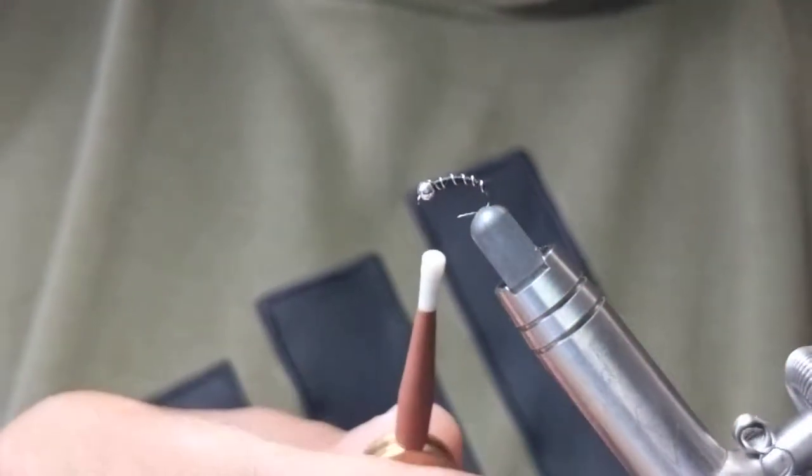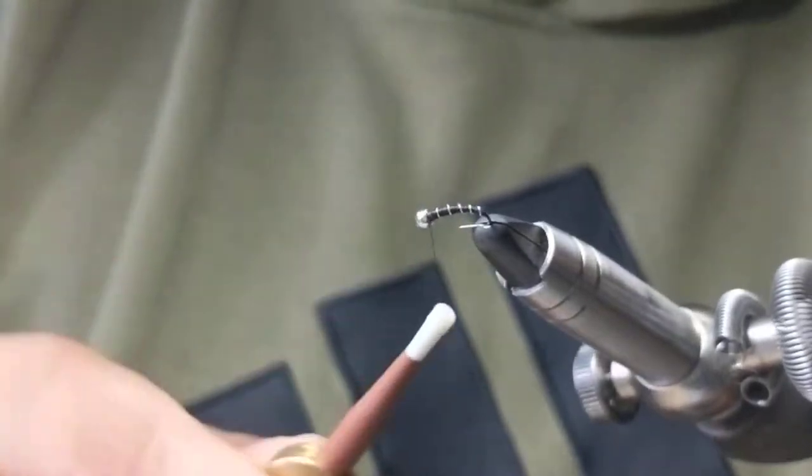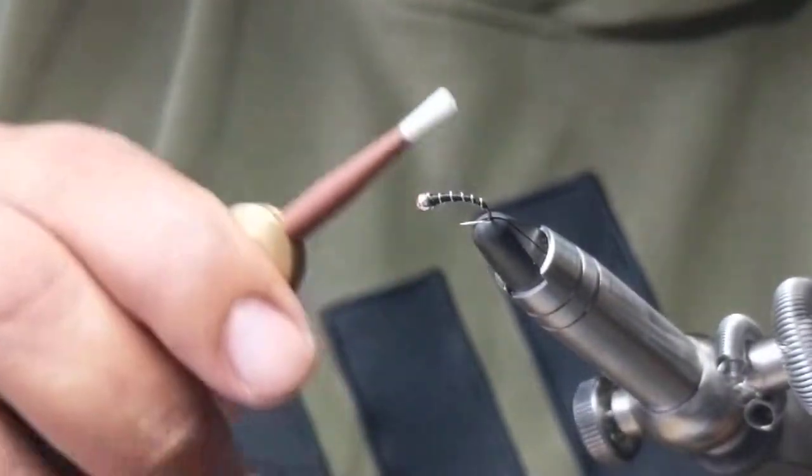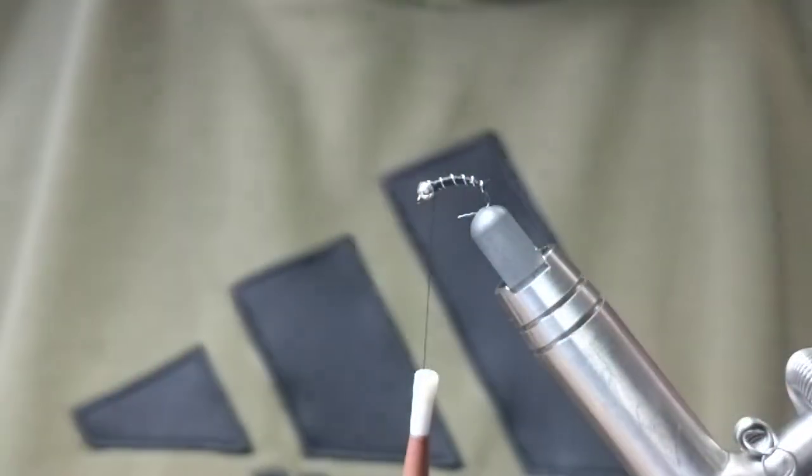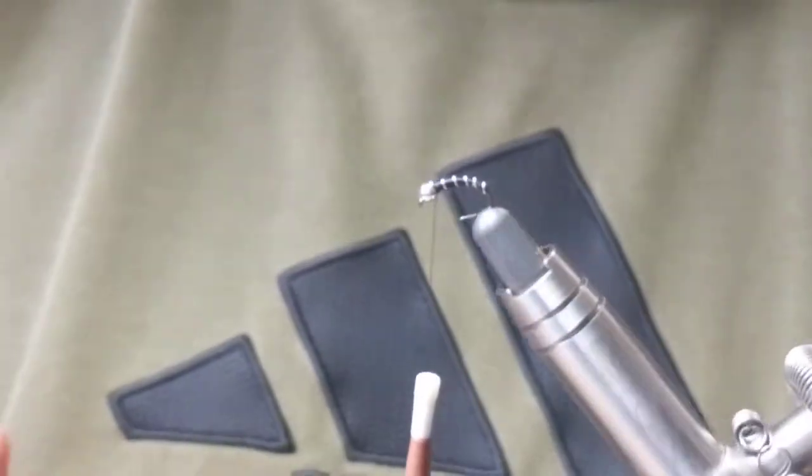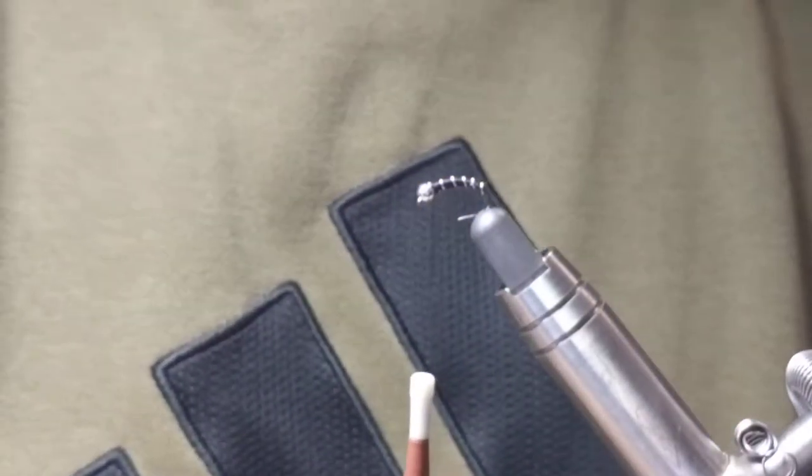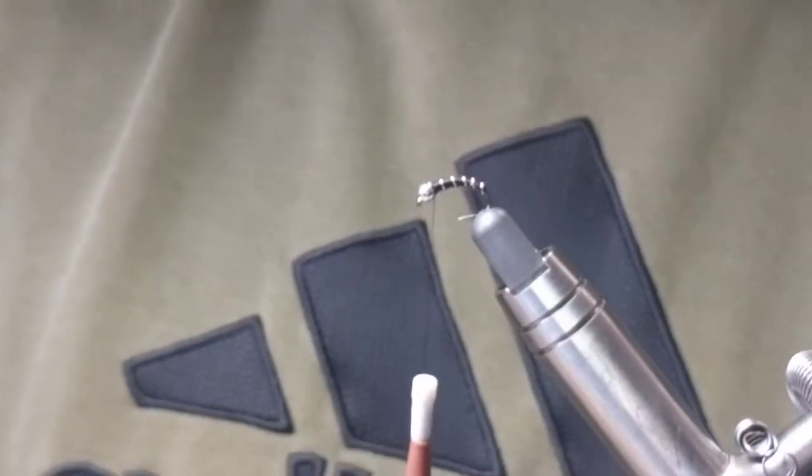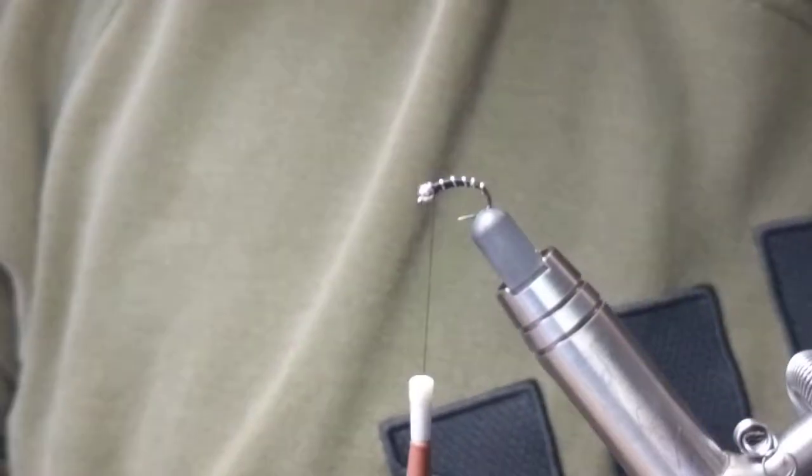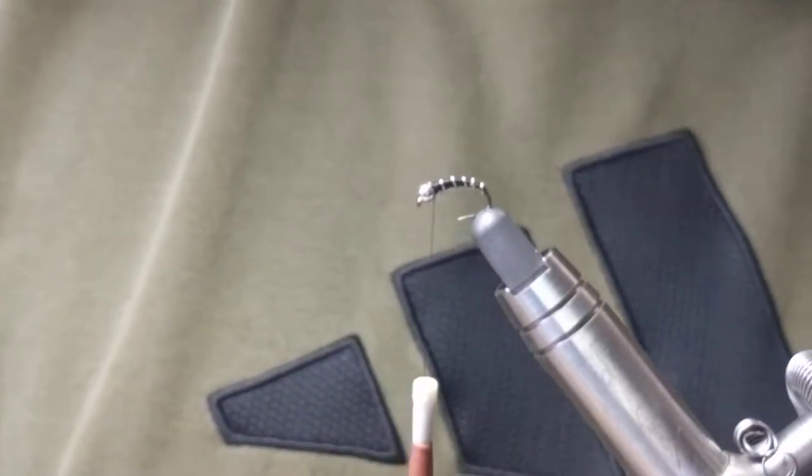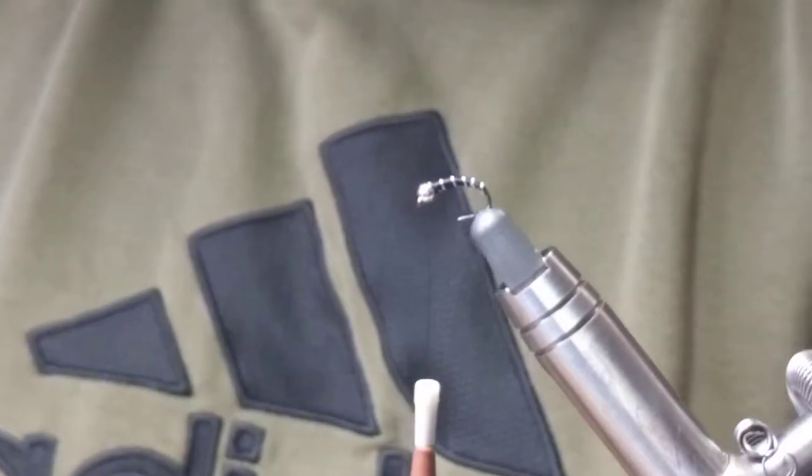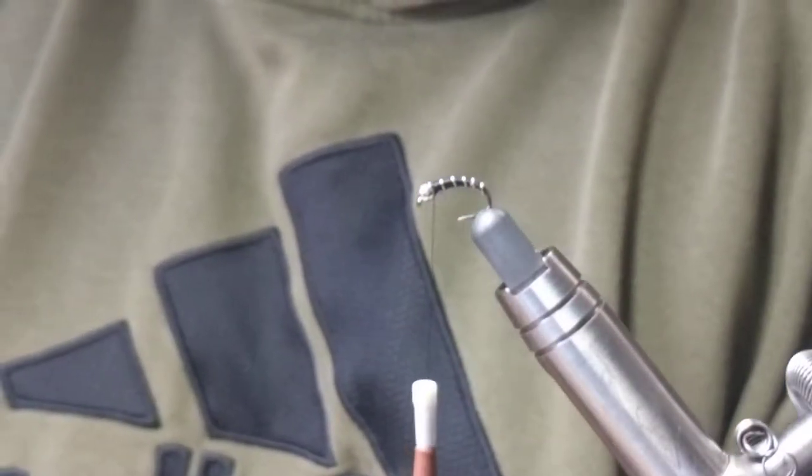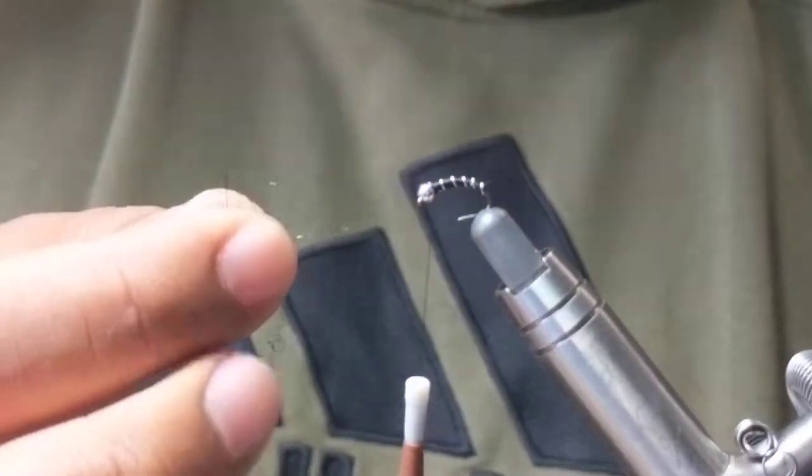Now from here I could essentially just make a nice collar, do a whip finish, and that thing is ready to go. Alternatively, you can get some nice black dubbing—here we are, I got some black ice dub. Sometimes I'll put a little bit just to give it some flash, give it a nice little collar.